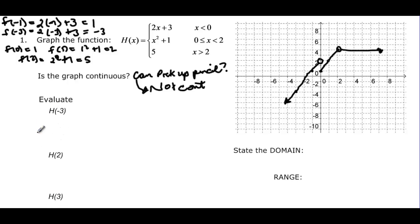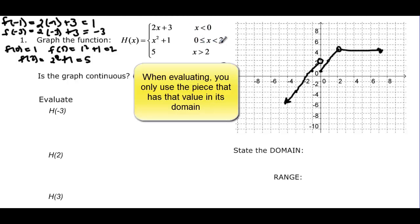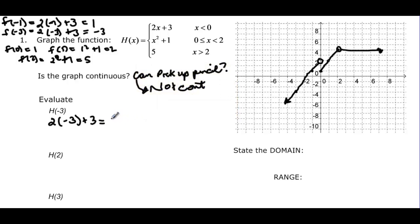Now we evaluate several points. H of negative 3: negative 3 fits the domain of x less than 0, so we use 2 times negative 3 plus 3, which equals negative 3. H of 2: it doesn't fit into x less than 0, it doesn't fit into 0 to 2 since 2 is not included there, and it doesn't fit into x greater than 2 either. So 2 is not in the domain.